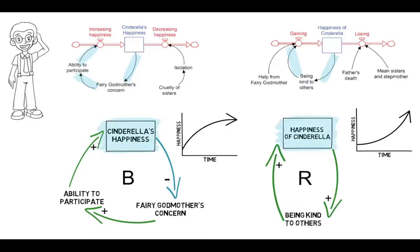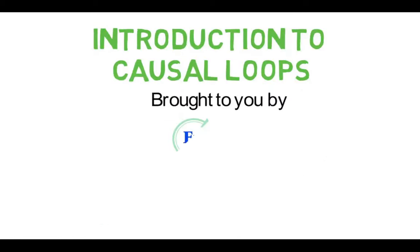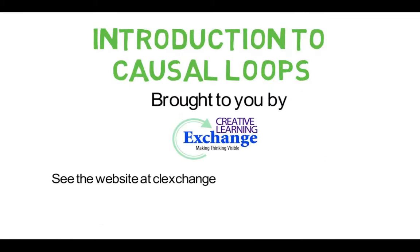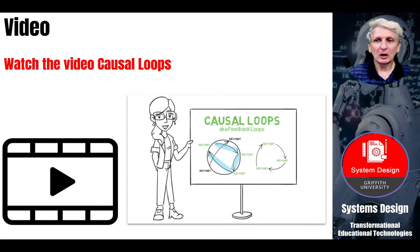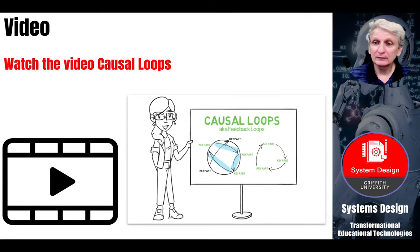Notice that we've drawn boxes around the stocks, even when they're represented in a loop. This simple practice helps to see the key accumulations in the system. That's an overview of causal loops and the idea of reinforcing and balancing loops. Now let's look at how we can go about developing such things.